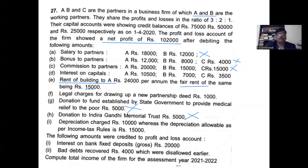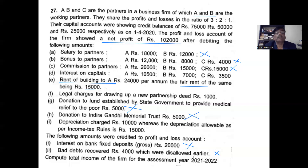Interest on bank deposit of 20,000 is not related to business, so you deduct it. In the deductions, three items come: interest on bank deposit, bad debt recovered, and depreciation. Take the net profit as per P&L account, add disallowed expenses, then deduct other head incomes and allowable expenses — you get the book profit.